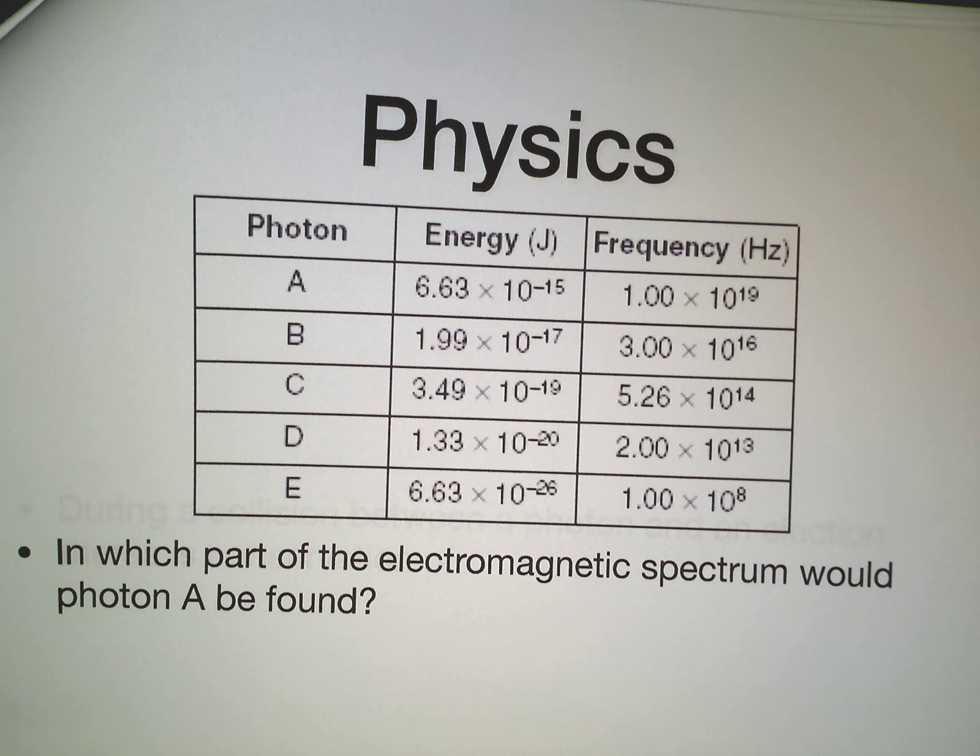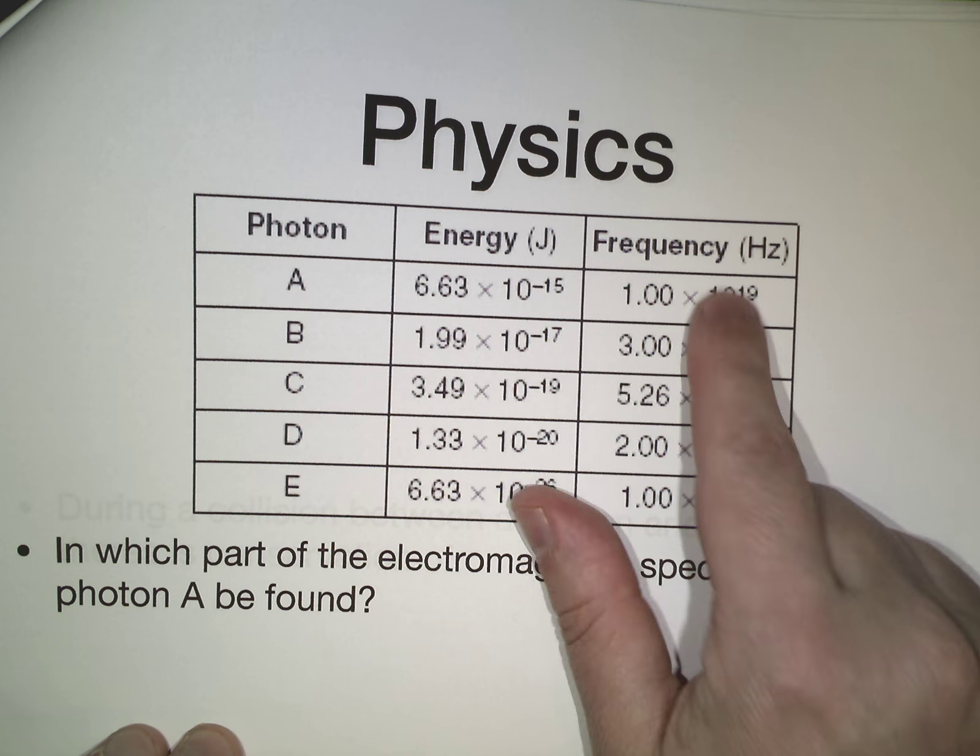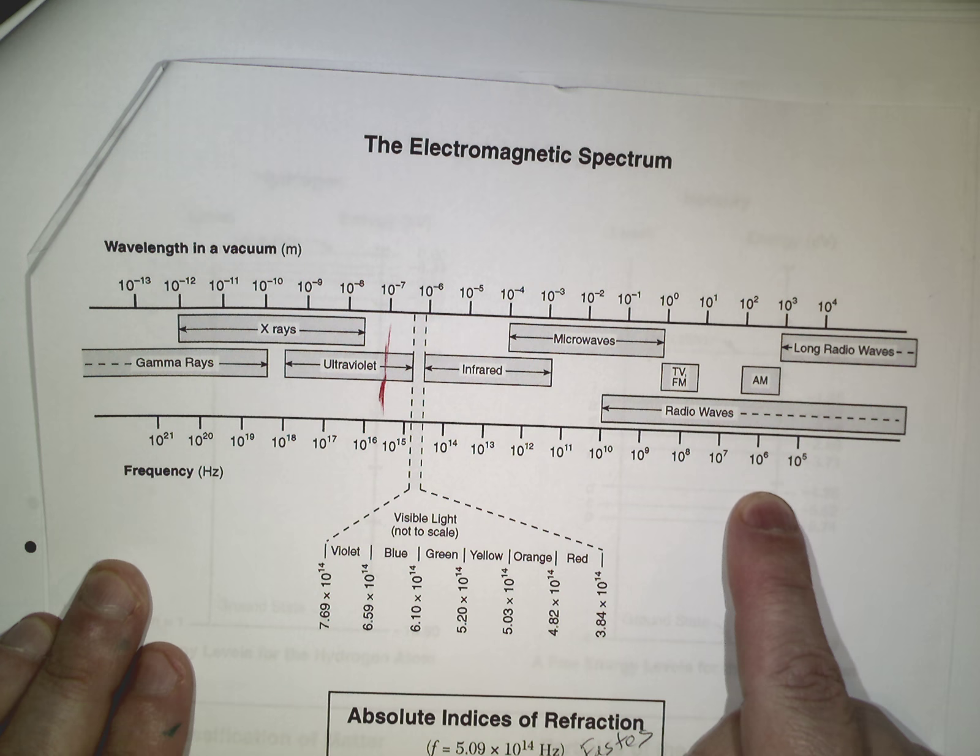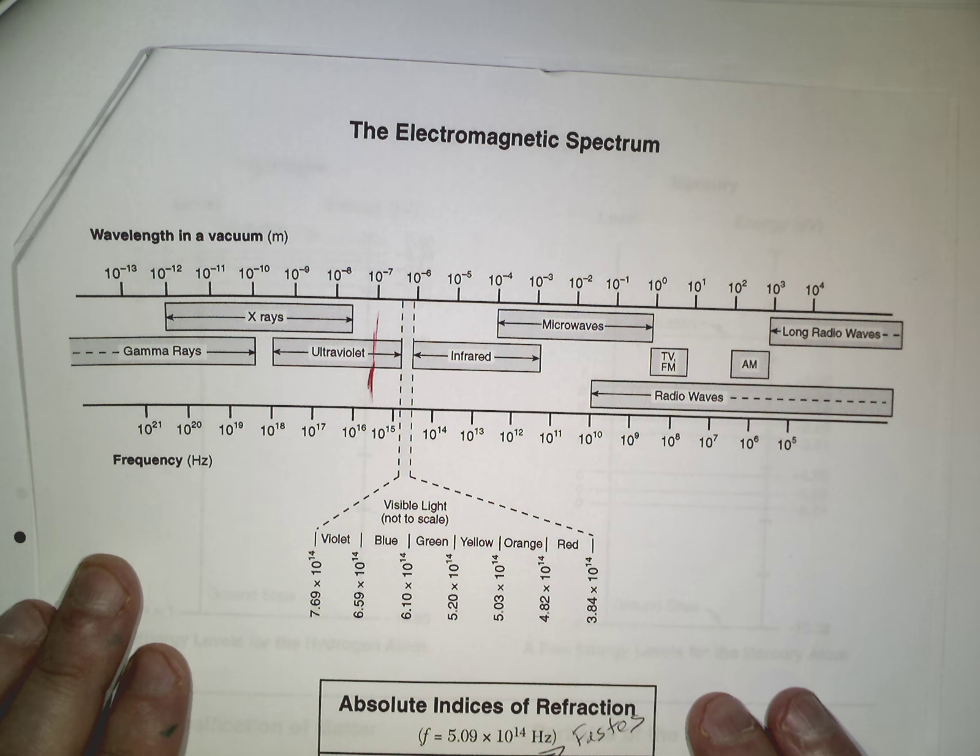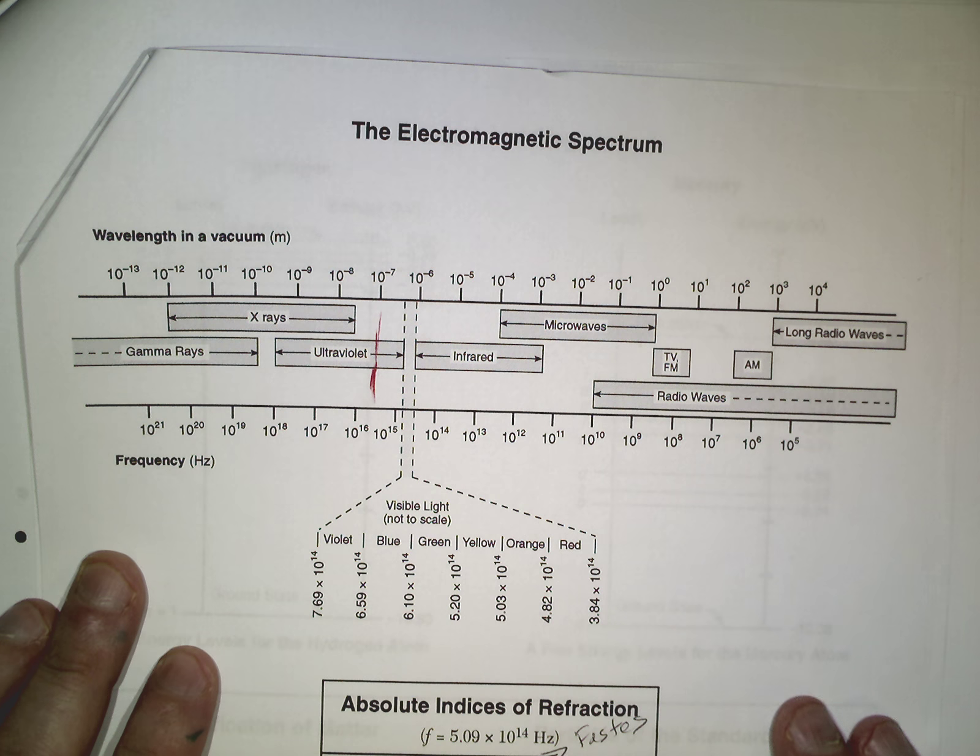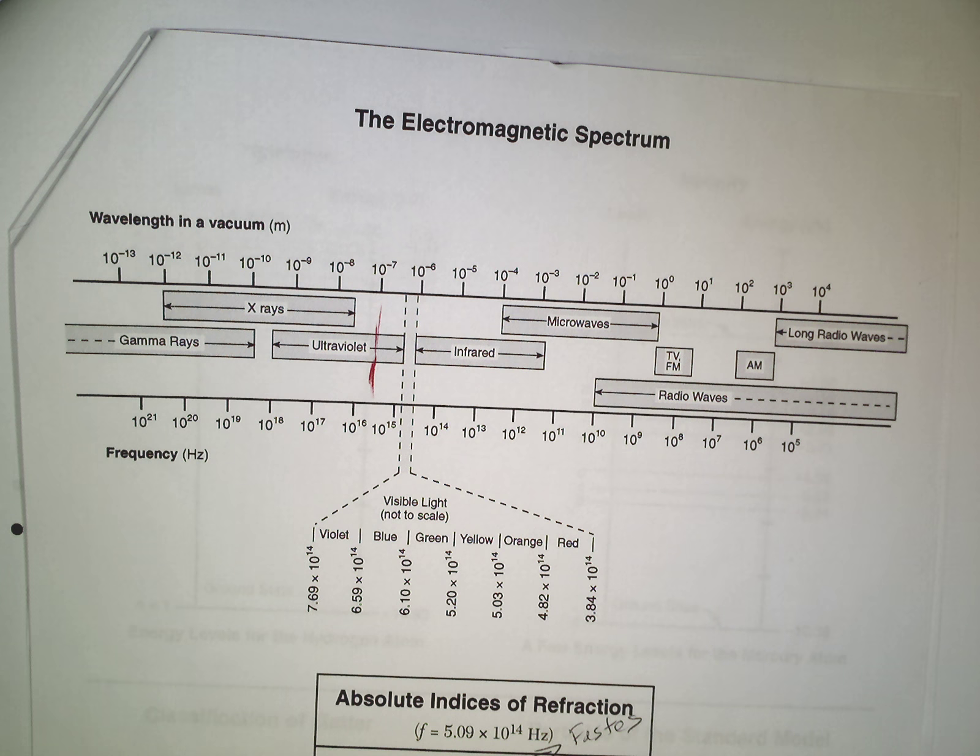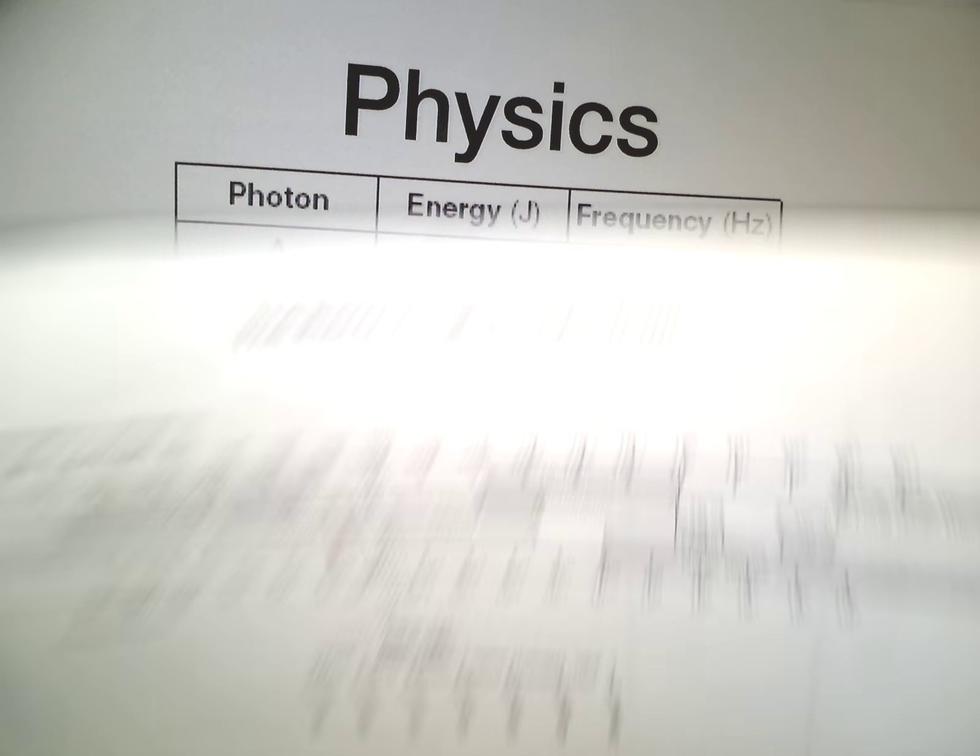Okay, so it says, which part of the electromagnetic spectrum would photon A be found? Now, so we look at all these different types of photons, we got a frequency for them, and we got an energy for them. Now, when I look on the electromagnetic spectrum, I see I have a scale for frequency. I see I have a scale for wavelength, but I do not have a scale for energy. So energy is completely useless in this problem. Unless I want to go back and try to figure the wavelength using E equals hc over lambda, good luck with that. You really have too much time on your hands if you want to do it that way. I'm just going to look at the frequency. And the frequency is 1 times 10 to the negative 9, 10 to the 19.